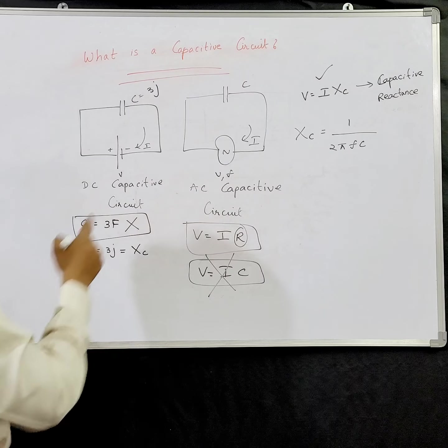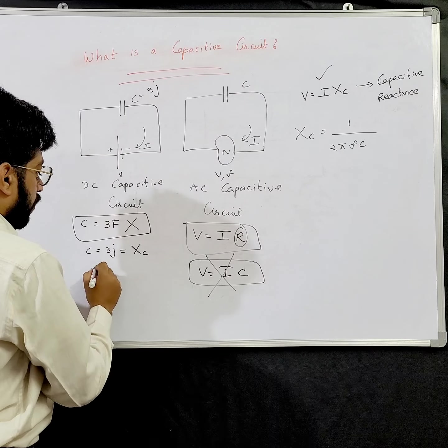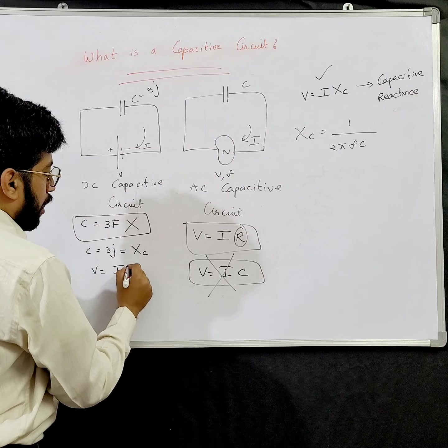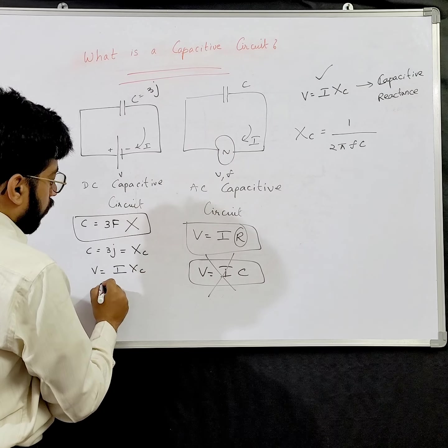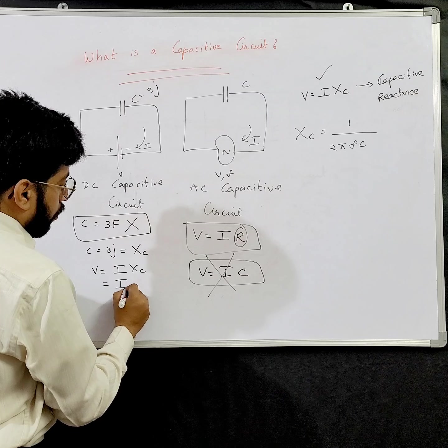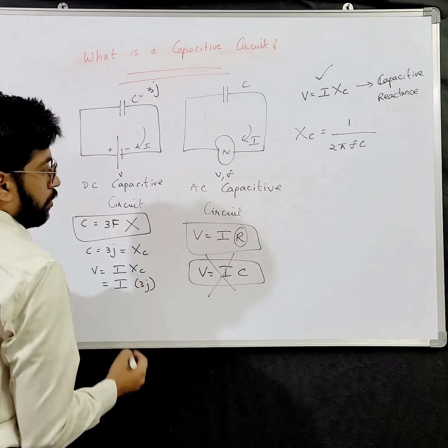So here you can apply the formula V equals I into Xc. This 3j is nothing but your Xc. Whatever the value of I is, you can substitute it with 3j to solve the circuit.